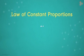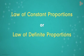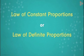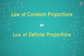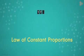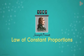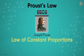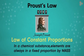Now we need to take a look at the second law, which is the law of constant proportions, also known as the law of definite proportions. The law was first put forth in the year 1797 by a French chemist called Joseph Proust, and hence it is also referred to as Proust's law. The law states that in a chemical substance, elements are always present in a fixed proportion by mass.